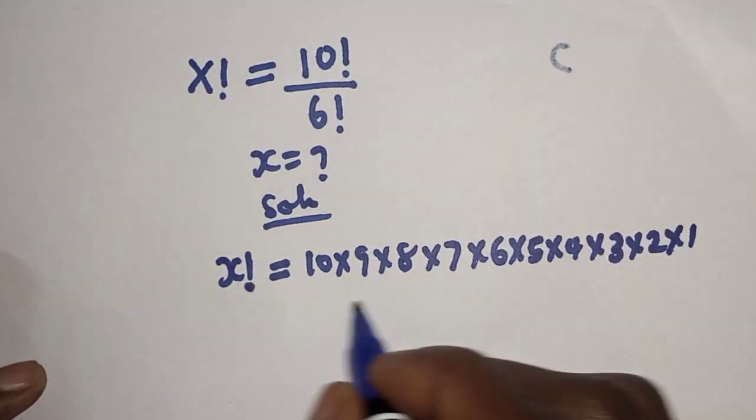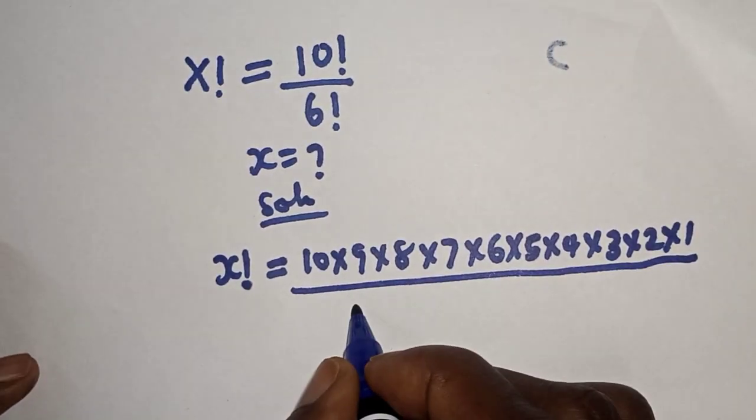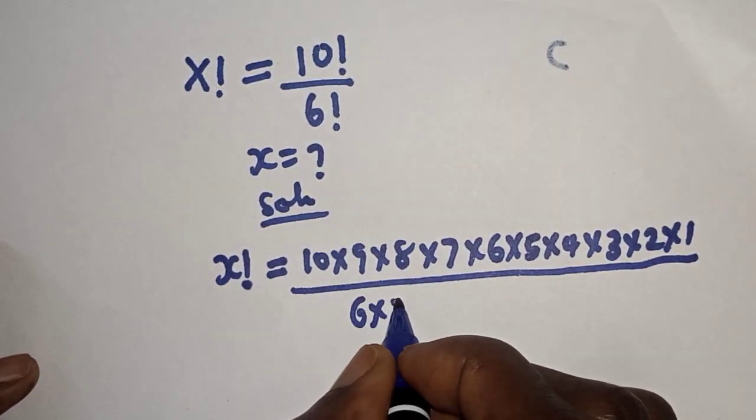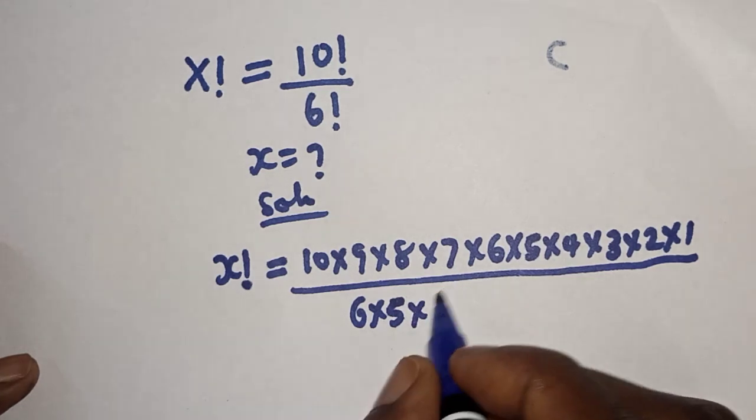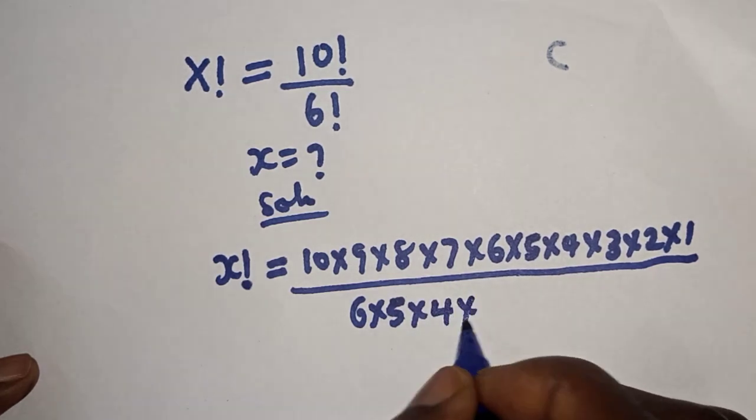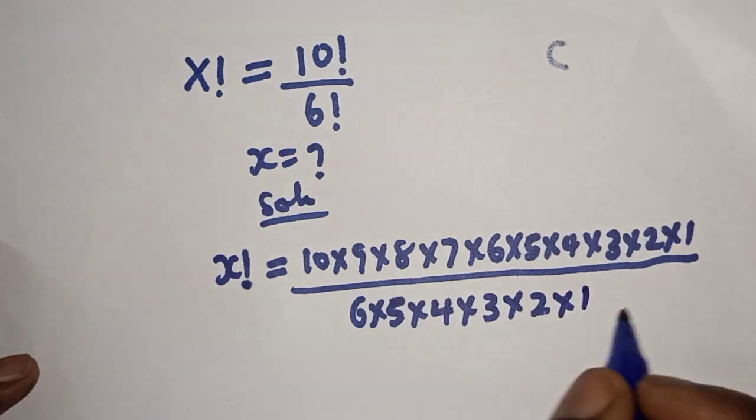6 factorial can be written as 6 multiplied by 5 multiplied by 4 multiplied by 3 multiplied by 2 multiplied by 1.